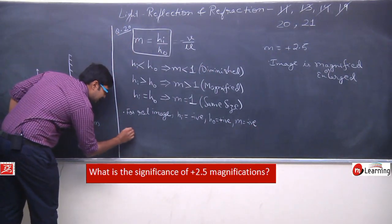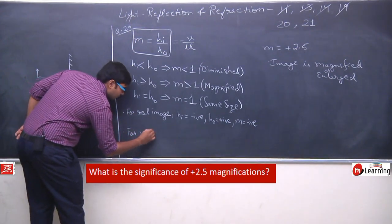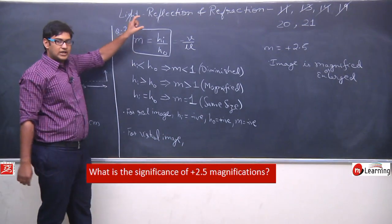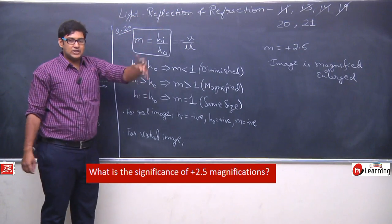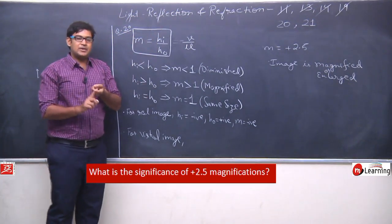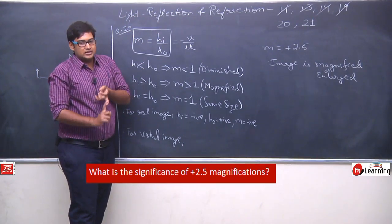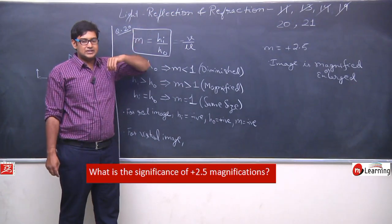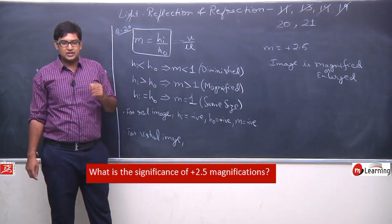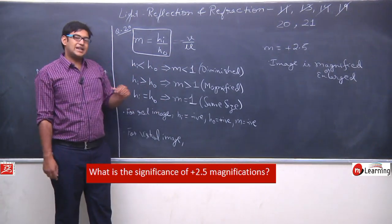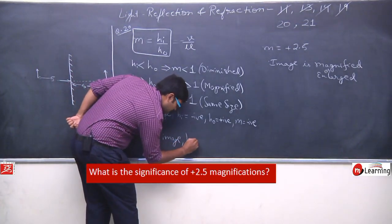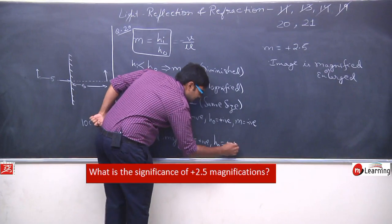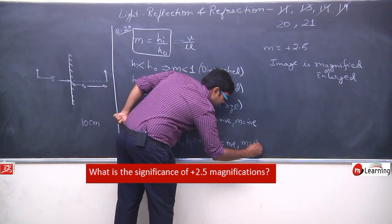So for a real image, magnification is negative. Now for a virtual image: if the object is above the principal axis, the image also forms above it. If the object is below, the image also forms below. So the sign convention of the object and image are always the same for virtual images — unlike real images where if the object is above the principal axis, the image forms below it, giving an inverted image.